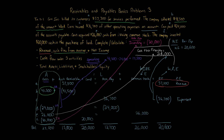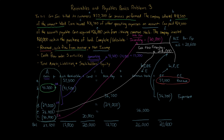All that's left is total assets, total liabilities, and stockholders' equity. Sum up the asset balances from the accounting equation for total assets of $59,300. Total liabilities is just the accounts payable balance of $12,700. Total stockholders' equity sums common stock and retained earnings for $46,600.